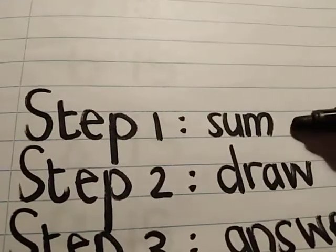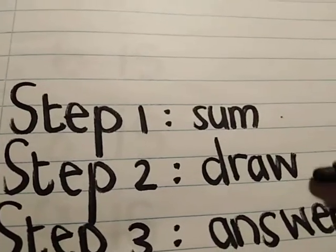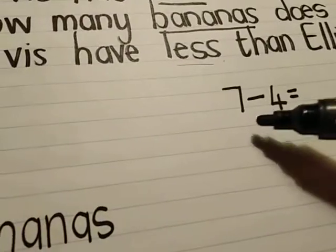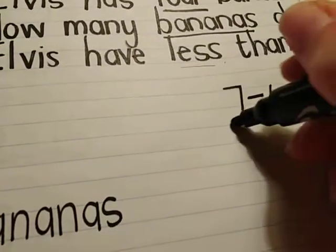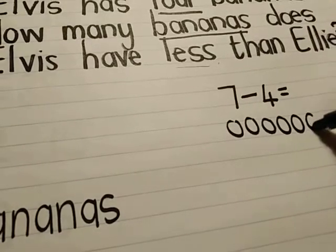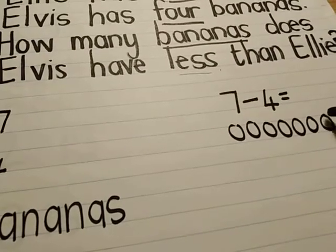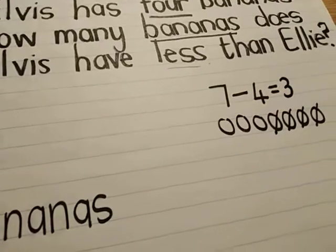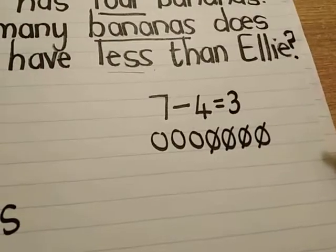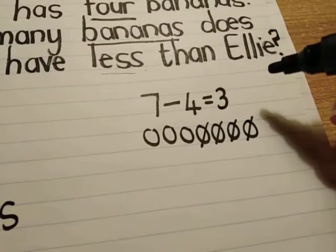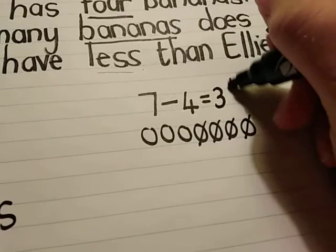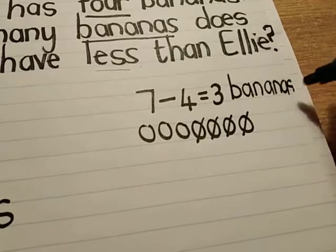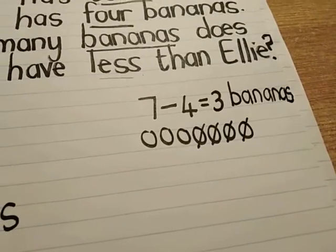Here are our steps: first we write our sum, then we draw our circles or other pictures, and then we write our answer. One, two, three, four, five, six, seven — take away four: one, two, three, four — I'm left with three. But I can't just write three; I have to write the right word with it. Three bananas! I haven't left myself enough space — I hope you leave yourself some more space.